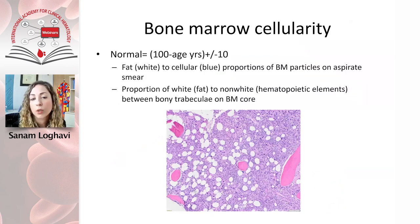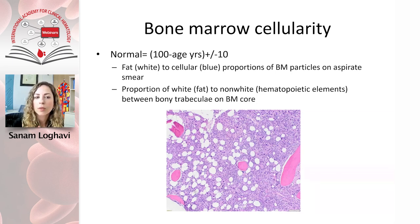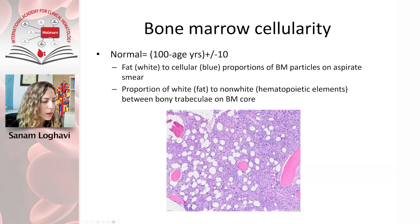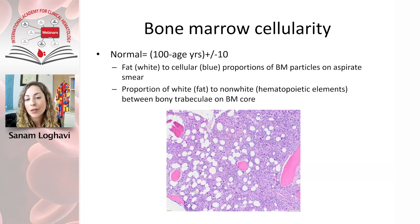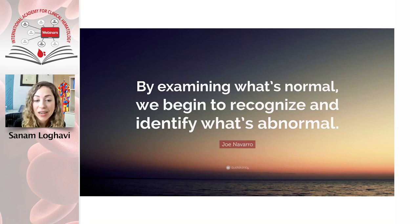Bone marrow cellularity is a very important feature in assessing pathology. Normal bone marrow cellularity is 100 minus the patient's age, plus or minus 10. So if I am 45 years old, my normal cellularity is around 55 to 65% — that ratio of hematopoietic elements to fat. As we age, cellularity decreases: in a newborn, it's close to 100% with very little fat; in a 90-year-old, there's about 90% fat. By examining what's normal, we can recognize what's abnormal.